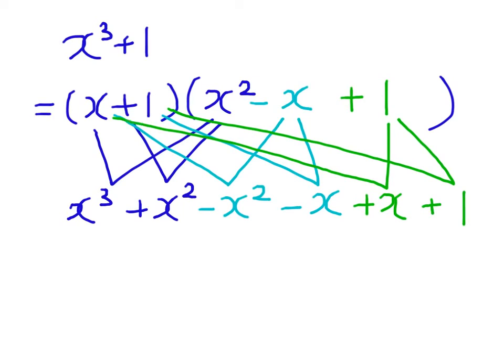Therefore, these middle terms cancel out with each other, giving us x³ + 1. So we have x³ + 1 = (x + 1)(x² - x + 1).